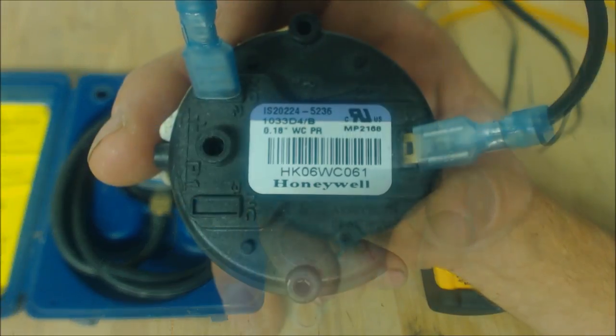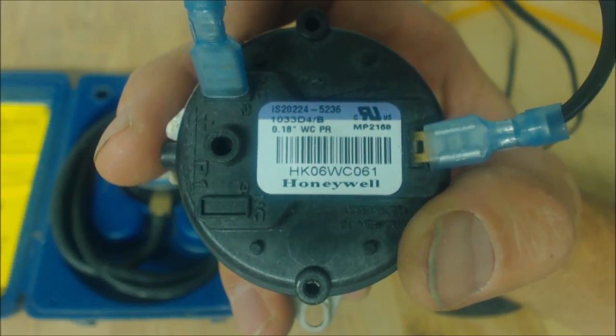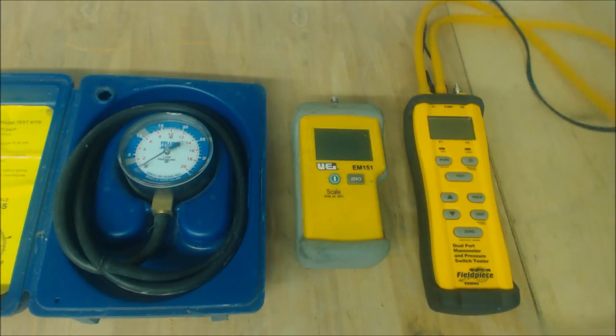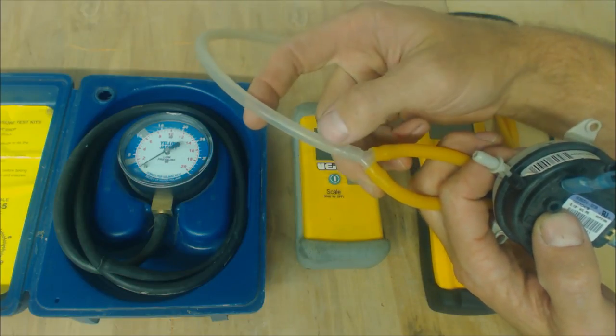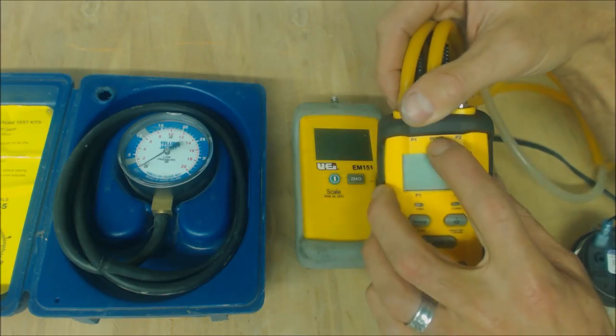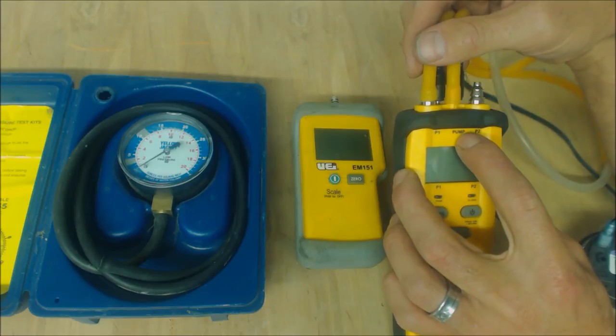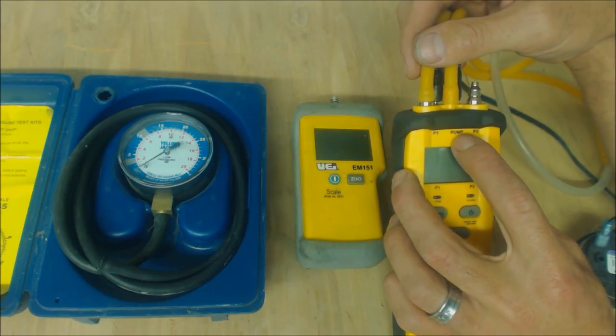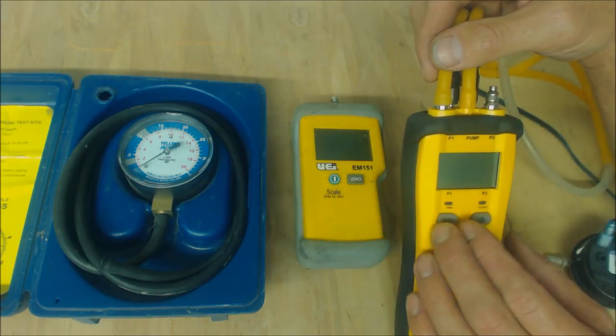This pressure switch is rated at 0.18 water column, so that's what we're looking for. Over here we have a junction from two tubes to one tube. This says 'pump' and this says 'P1.' We're going to use the pump to pump negative pressure and read it at P1.